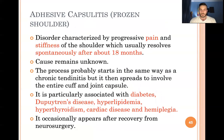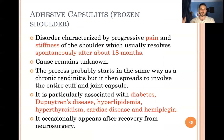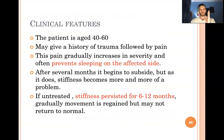Adhesive capsulitis (frozen shoulder) involves pain and stiffness over approximately 18 months. The sequence: starts with pain, then progressive stiffness, then pain subsides while stiffness remains, then the stiffness resolves. The cause is largely unknown, but risk factors include diabetes, Dupuytren's disease, hyperlipidemia, hyperthyroidism, and cardiac disease.